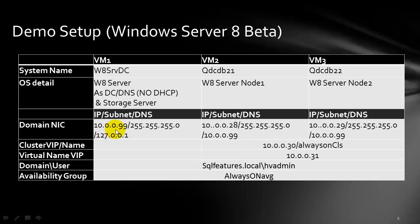Here are the key configurations for the domain controller — that's the name of the VM and these are the IP addresses. So let's go ahead and start configuring.